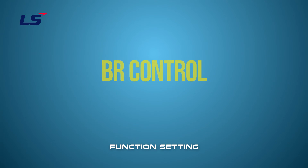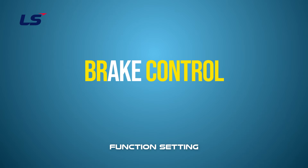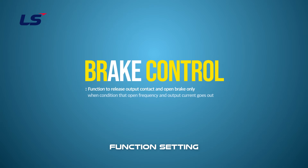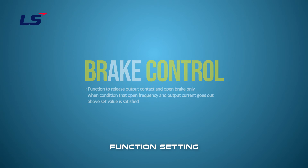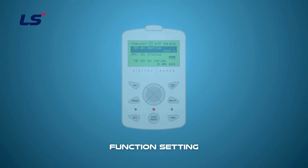Next, we will learn about the BR control functions. If FDT has controlled the brakes according to the output frequency, the BR control function will only release the output and release the brakes if both the output frequency and output current are above the set value.